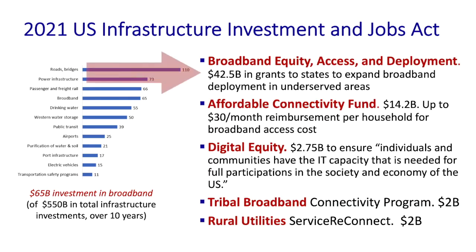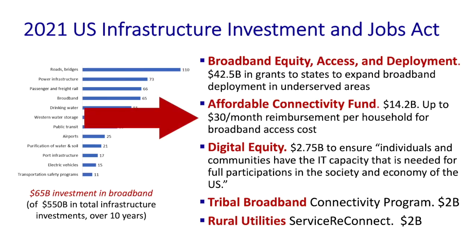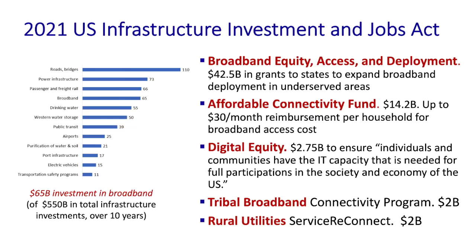$45 billion — almost three quarters of that $65 billion broadband investment — is for broadband equity, access, and deployments, to expand broadband internet access to places where it doesn't exist yet. These funds will be administered by the states. There's also an affordable connectivity fund with more than $14 billion to defray the costs of broadband access and help bridge the income-based digital divide. And there are provisions for broadband access for those living on Native American tribal lands and for rural utilities.